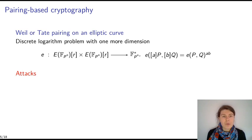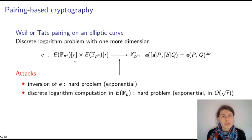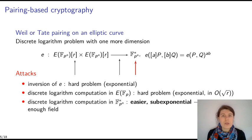So we need to consider these attacks. We need a hard inversion. We need the discrete logarithm on the curve to be hard. So it has an exponential complexity of approximately square root of r. And we also need the discrete logarithm in the finite field to be hard. But this is easier. This has a sub-exponential complexity. So we need to be sure that we take a large enough field.